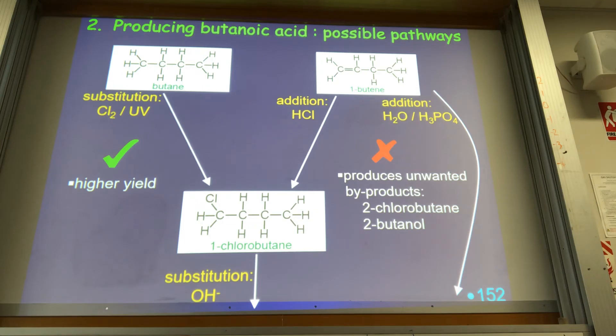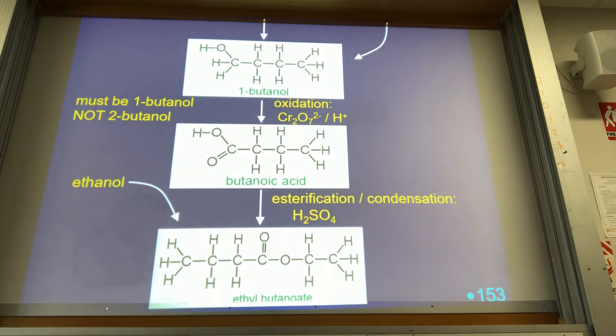Then substitute it to produce butanol. So once you get your butanol, once you get your 1-butanol, you can then oxidize it to butanoic acid, and then you can do the condensation reaction with ethanol to produce the ester.